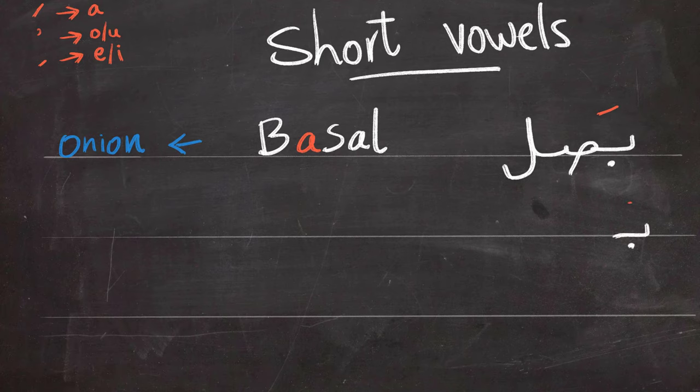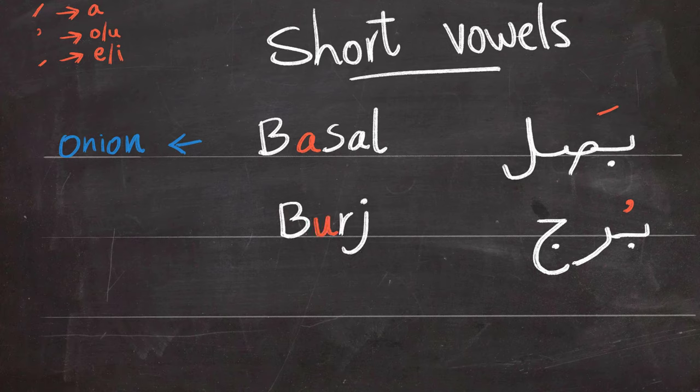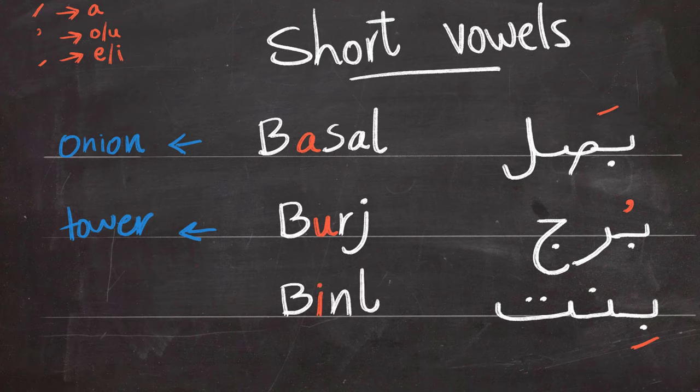The second example is burj. And it means tower. See how the difference of B in the first example, and the second example. The first one we said basal and then the second one we said burj. The third example is bint, and bint means girl. So now see how the different B sounds between all three of these examples. Ba basal, Bu burj, Bi bint.